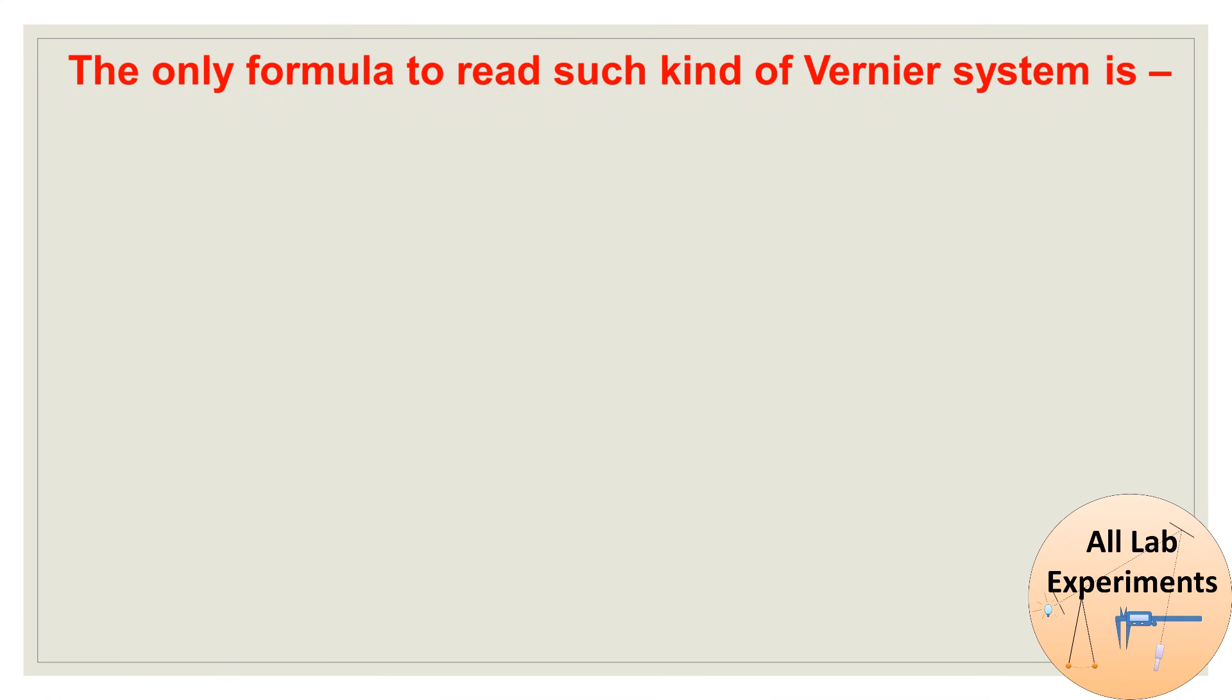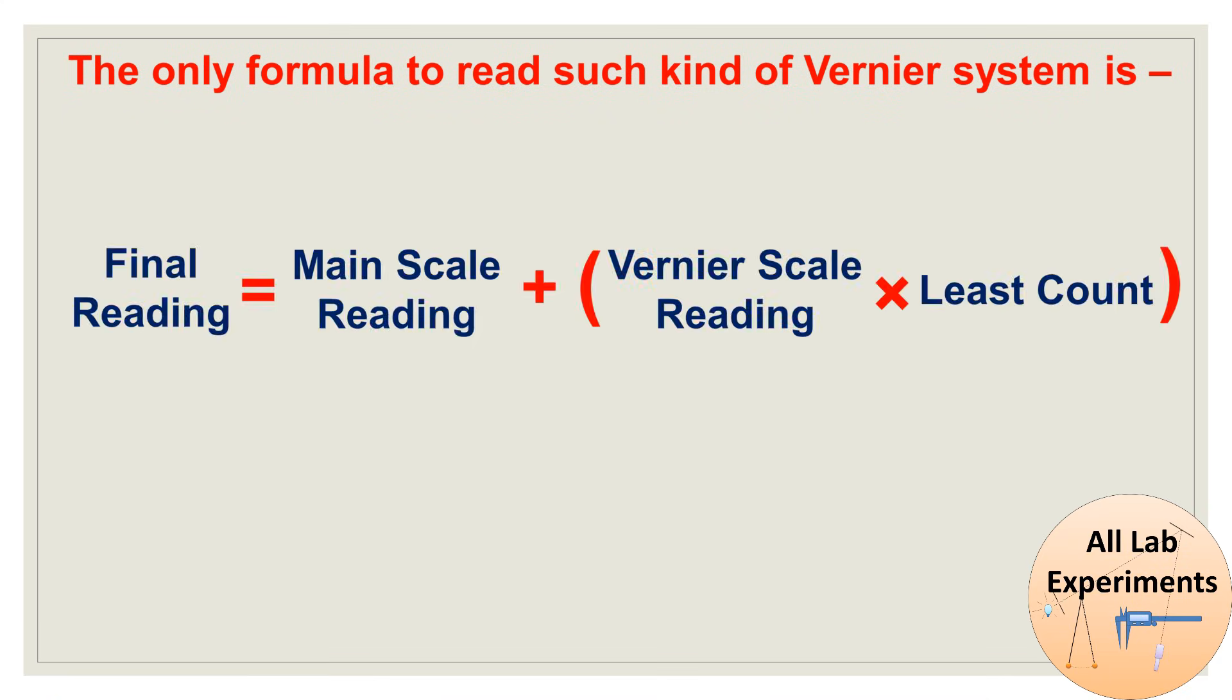The only formula to read such kind of vernier systems is this one: Final reading equals main scale reading plus vernier scale reading times least count. You have also studied this formula to read a vernier calipers. We can break this into 4 steps.